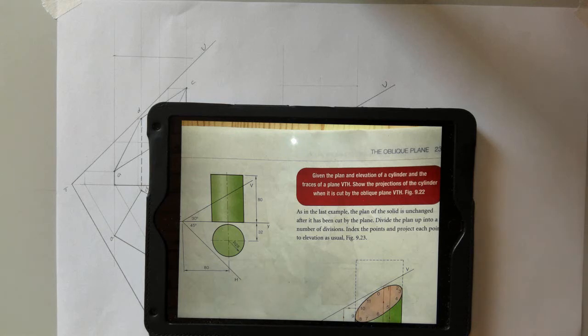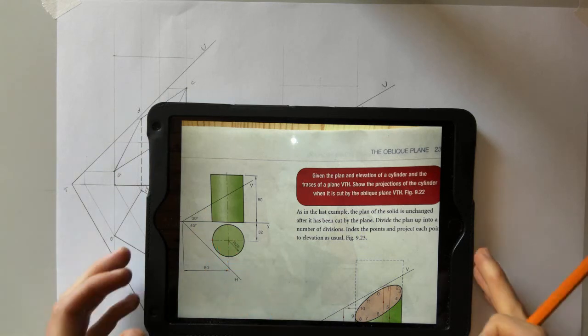For the next question, it tells us given the plan and elevation of the cylinder and the trace of the plane VTH, show the projections of the cylinder when it is cut by the oblique plane VTH. So the same idea as the first one. We draw our elevation and plan and we divide up our plan this time to a number of equal points and take them up and across to find their projections in the cut.